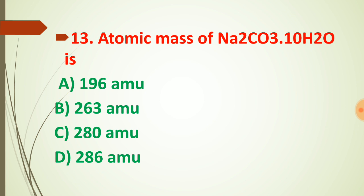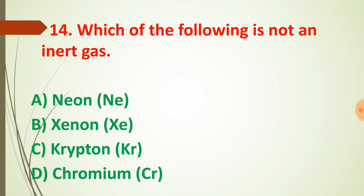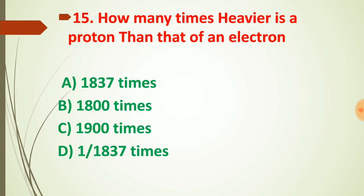Question number fourteen: which of the following is not an inert gas? We know there are different inert gases in the periodic table — neon, argon, krypton, xenon, and others are inert gases. However, chromium is not an inert gas. So the answer for question number fourteen is chromium.